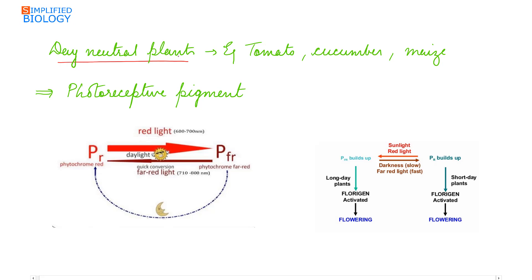The third type is day neutral plants. In these plants, the length of the dark period or the photoperiod does not have any effect on flowering; they will flower in all seasons. Examples are tomato, cucumber, and maize.